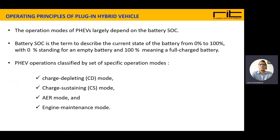The plug-in hybrid electric vehicle operations are classified by its operating modes. There are mainly four operating modes: the first is charge depleting mode, called CD mode; the second is charge sustaining mode, called CS mode; the third is all-electric range mode, called AER mode; and the fourth is the engine maintenance mode. We will see these modes one by one.